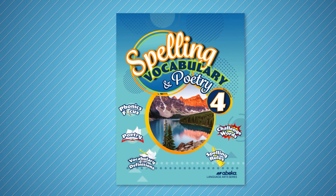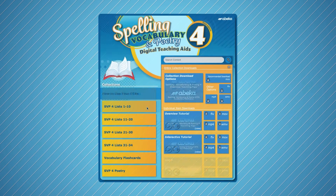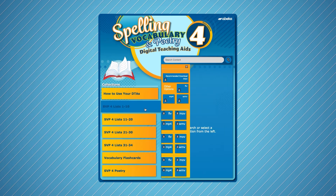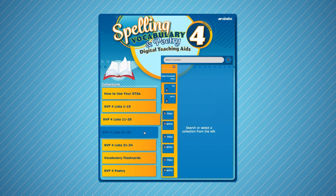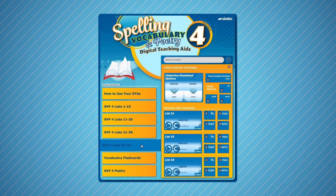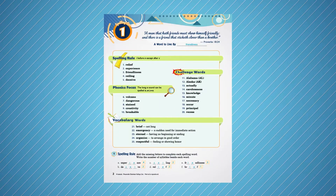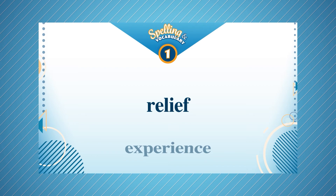Each DTA corresponds with the spelling, vocabulary, and poetry for book. These 34 spelling lists were created to save you time during lesson preparation and offer your students a variety of ways to learn and review spelling and vocabulary words, as well as poetry. The lists are shown as a rotating wheel with the upcoming word previewed underneath the current word being learned.